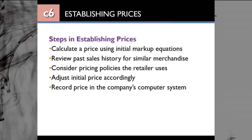You need to adjust the initial price accordingly. If some merchandise is not selling well, you need to consider possible markdowns. If you have a promotional event, you can think about a temporary markdown. Also, if you have additional unexpected expenses when getting the product from your vendor, you need to adjust your initial price — maybe mark it up a little more before putting it on the floor. And you need to record the price in the company's computer system so you can keep track of order information, which will also be great for future records.